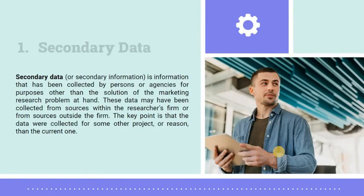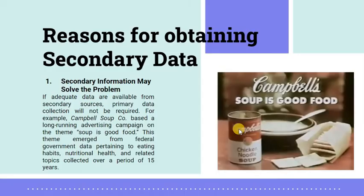First, let's define what secondary data is. Secondary data, or secondary information, is information that has been collected by persons or agencies for purposes other than the solution of the marketing research problem at hand. These data may have been collected from sources within the researcher's firm or from sources outside the firm. The key point is that the data were collected for some other project or reason than the current one. Secondary data is equivalent to related literature in a thesis, and all of this information supports the entirety of our research.